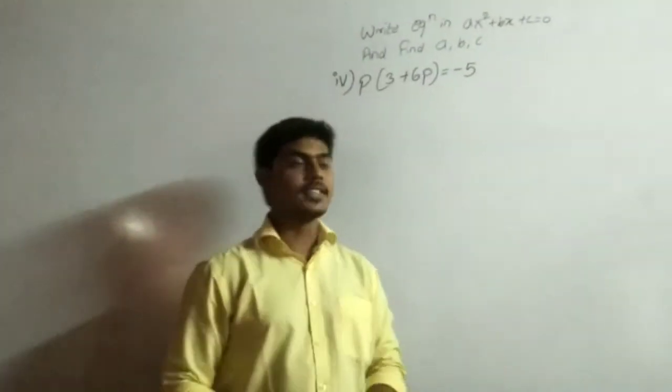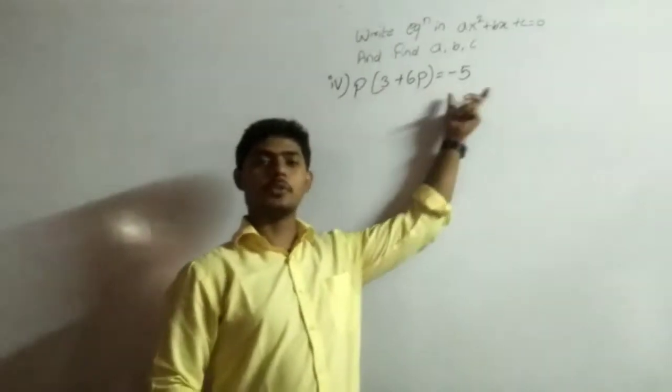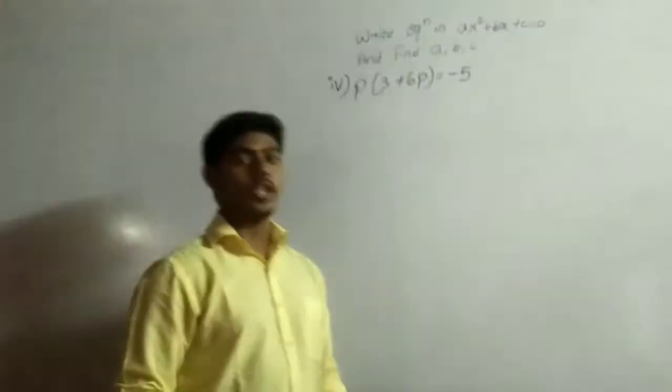P in a bracket x, 3 plus 6P bracket goes equals to minus 5. Then, how can we solve it?